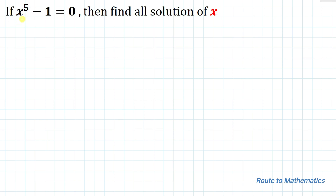Here we have given: if x to the power 5 minus 1 equals to 0, then find all solutions of x. So we are asked to find all the values of x from this given equation.